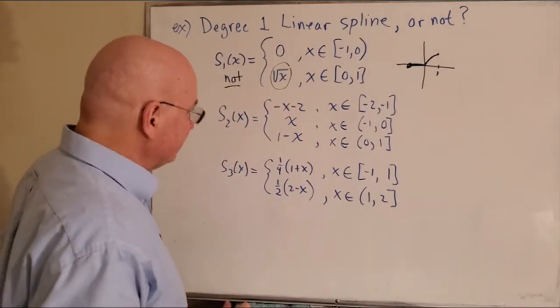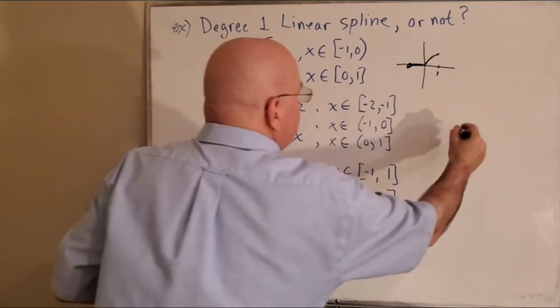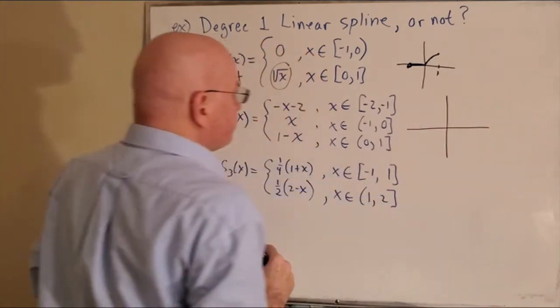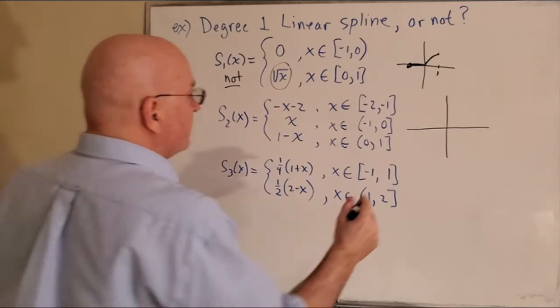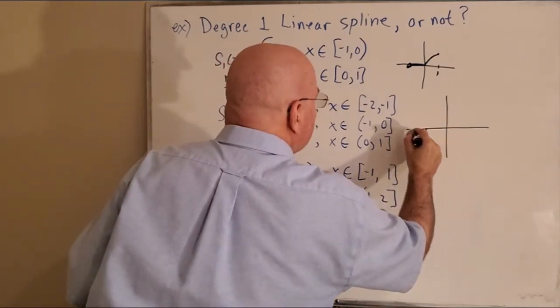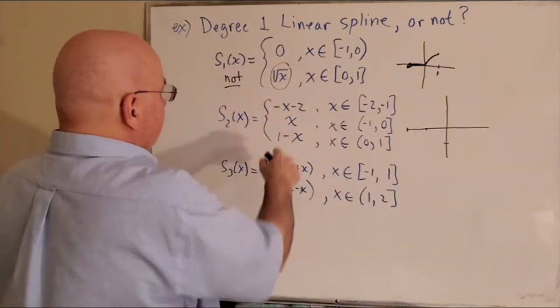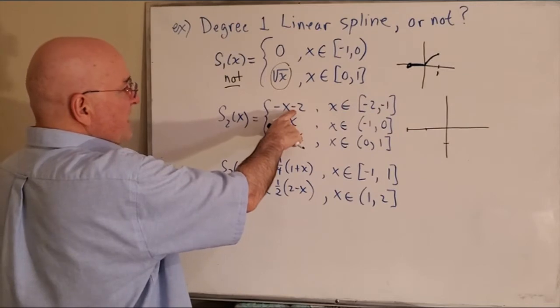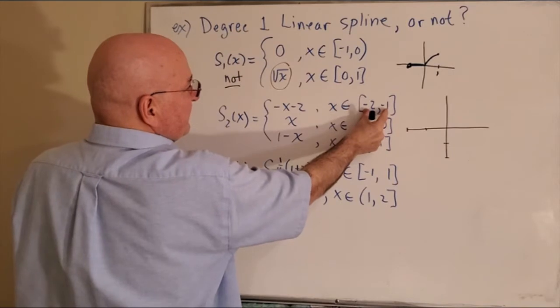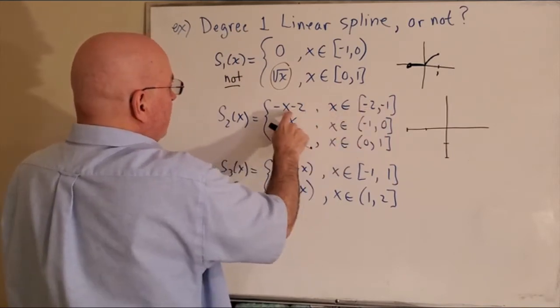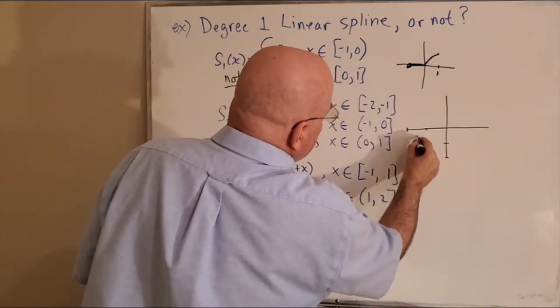All right, the second one. I got three things to worry about here. Okay, so the first portion - let me draw a graph. From negative two to negative one it's this line, the line that has a y-intercept of negative two, but I don't start it there because the line segment is only from negative two to negative one, and it has a slope of negative one, so it would be that.